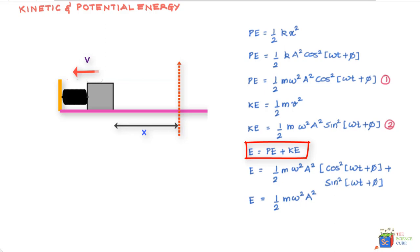If a system has a certain amplitude and a certain angular frequency, the mechanical energy of the system is fixed and does not change. You can also write this as E = ½ka², because mω² is nothing but k. This is an important expression: the total energy of the system equals ½ka². Now let's go ahead and plot the energy values on a displacement-energy graph.